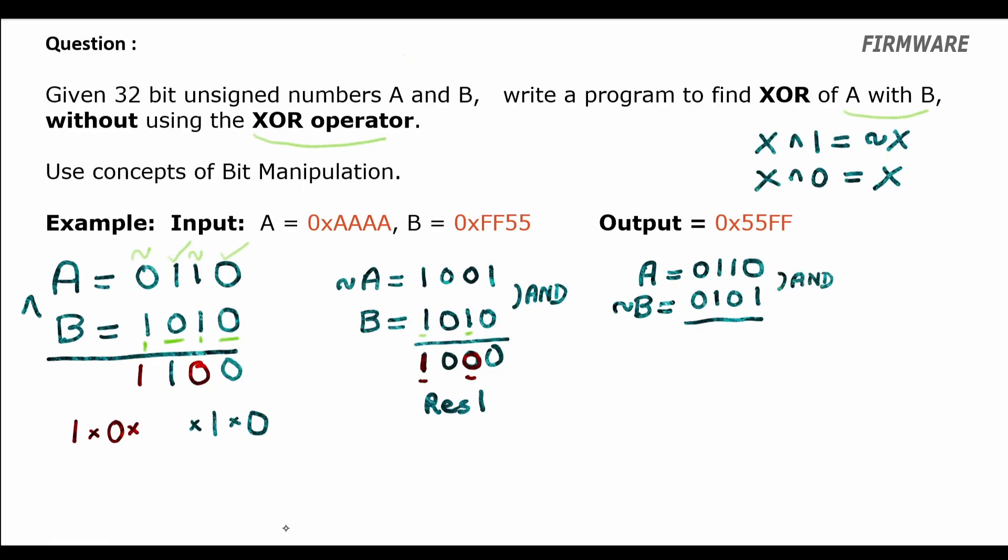Therefore we have result 2 equal to 0100. In this result the LSB bit and the third bit are the same bits of A and the remaining bits in the result are fixed to 0. So we have extracted both set of bits, result 1 and result 2. Now we need to combine these two results and to combine them we just need to do an OR operation between result 1 and result 2.